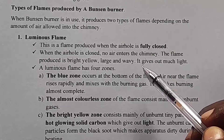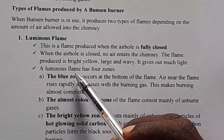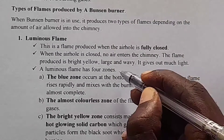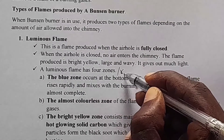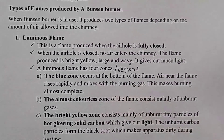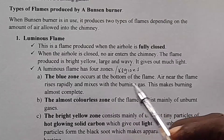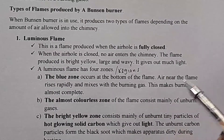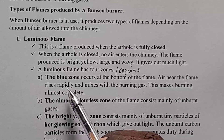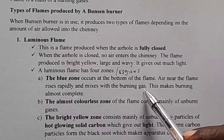These are the characteristics of luminous flame. A luminous flame has four zones or four regions. The first region is the blue zone. It occurs at the bottom of the flame. Air near the flame rises rapidly and mixes with the burning gas.